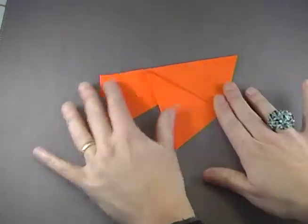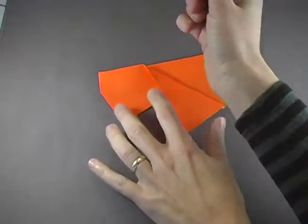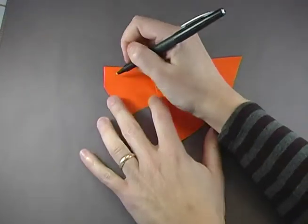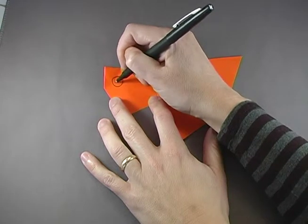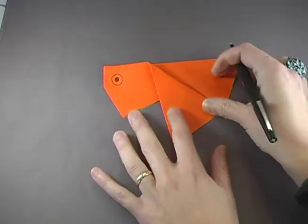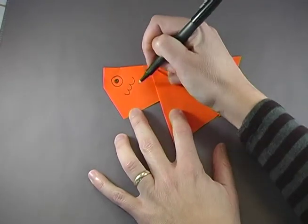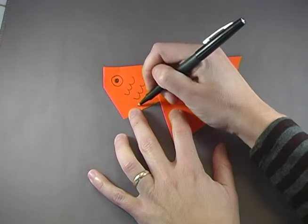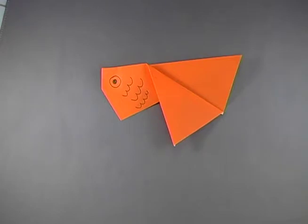But to bring it to life, you can get a marker or paint or googly eyes, whatever you want. And we're going to add an eye right there. You can leave it like that. Or we can add some scales. Oh, he looks goldfishy. There you go. An origami goldfish.